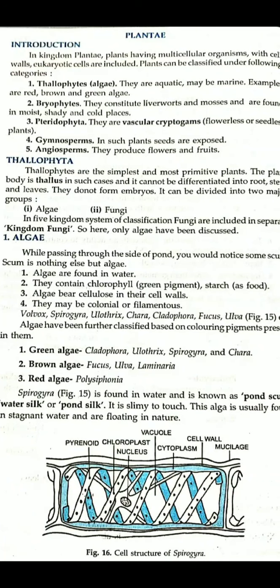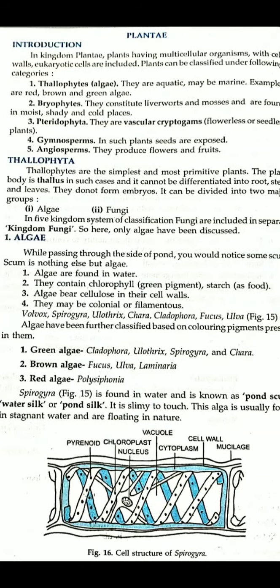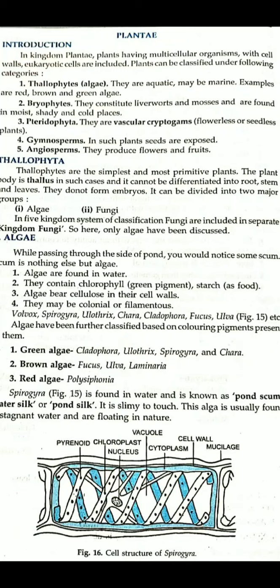The second type is Bryophytes — these are liverworts and mosses. These are found more in moist, shady and cold places. The third type is Pteridophyta — these are vascular cryptogams and seedless plants. The fourth type is Gymnosperms — these are seeds exposed. The fifth type is Angiosperms — these are plants with flowers and fruits.